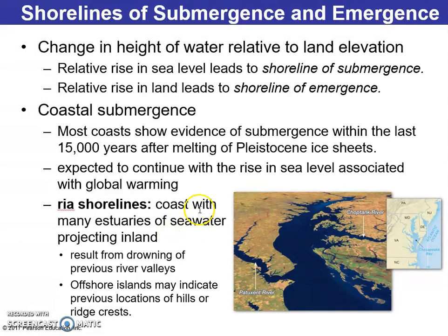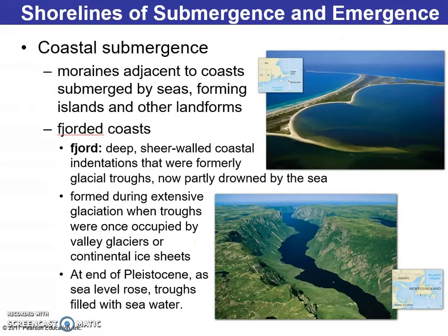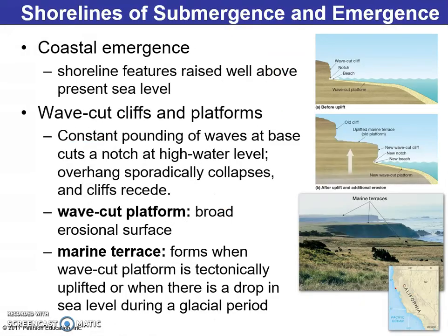Ria shorelines are close with many estuaries and seaward projecting inlets. Coastal submergence is exemplified when moraines adjacent to the coast are submerged by seas, forming islands — we see land being formed that way. By contrast, emergent coasts are raised well above the present sea level, with land being formed differently.